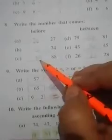What comes before 88? 87. Then between - 43, 44, 45. And 26, 27, 28. Next is after: After 46, what comes? 47. After 11, what comes? 12. After 33, what comes? 34.